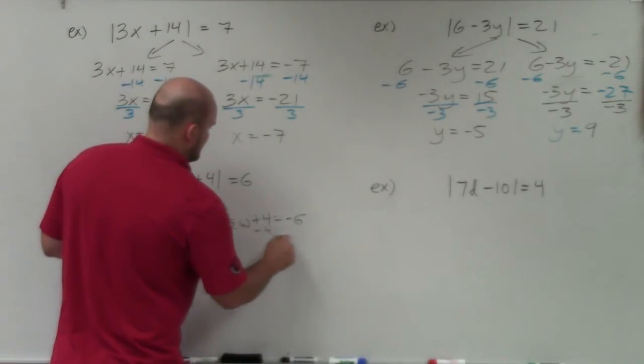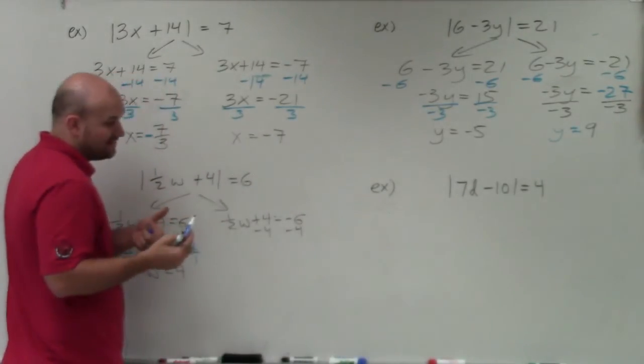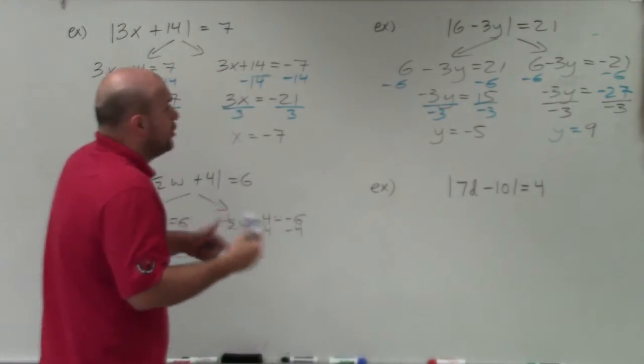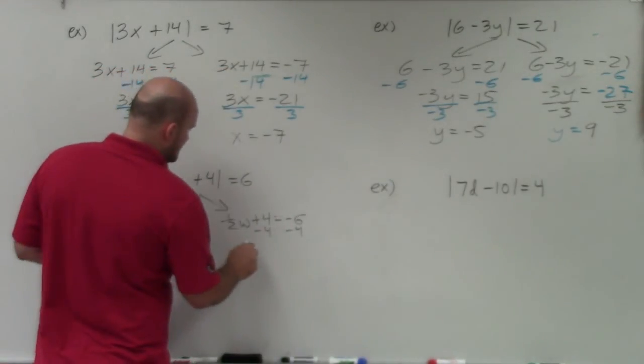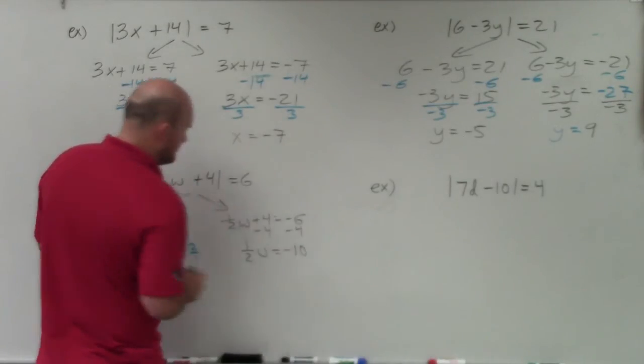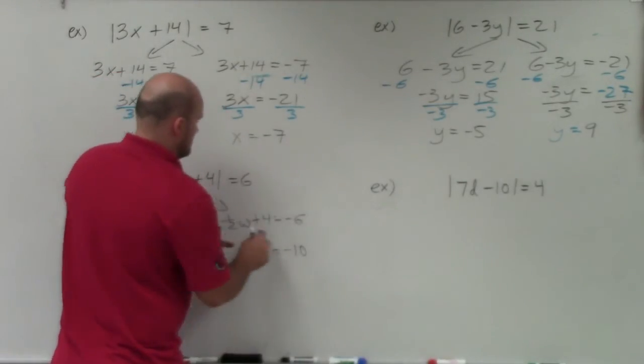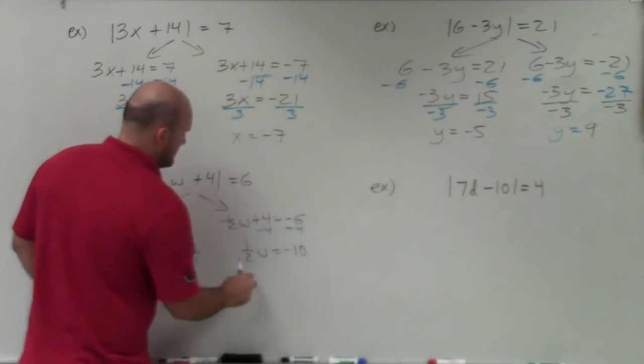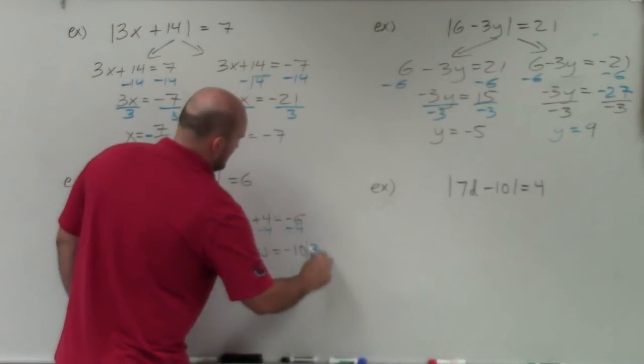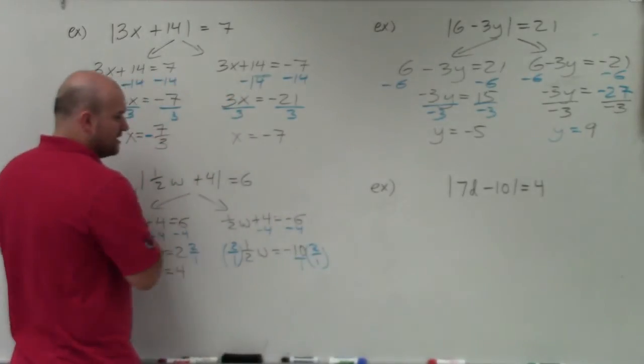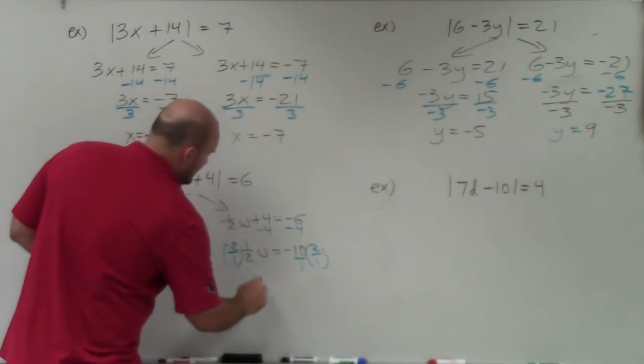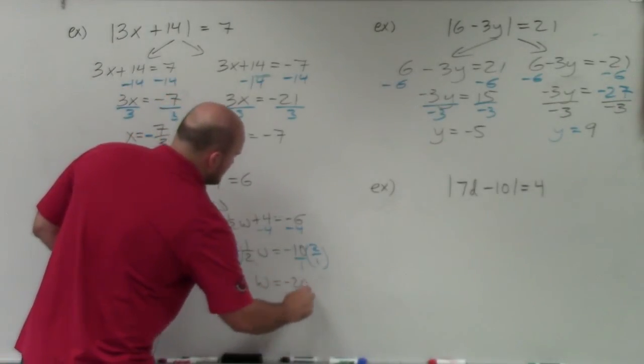Over here, I'll subtract 4 on both sides. Remember, when you have a negative number minus 4, if you owe me $6 and you borrow 4 more dollars, you now owe me negative $10. So I have 1 and a half w equals negative 10. I like using color codes. Then again, I'll multiply by 2 over 1. You could think of the 10 as 10 over 1, so negative 10 times 2 is negative 20. Over 1 is just negative 20.